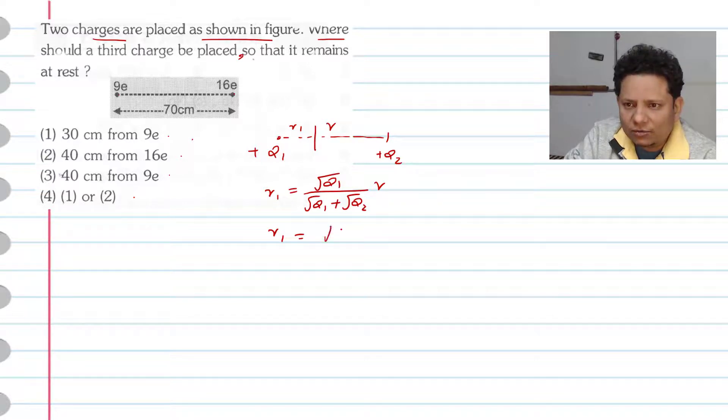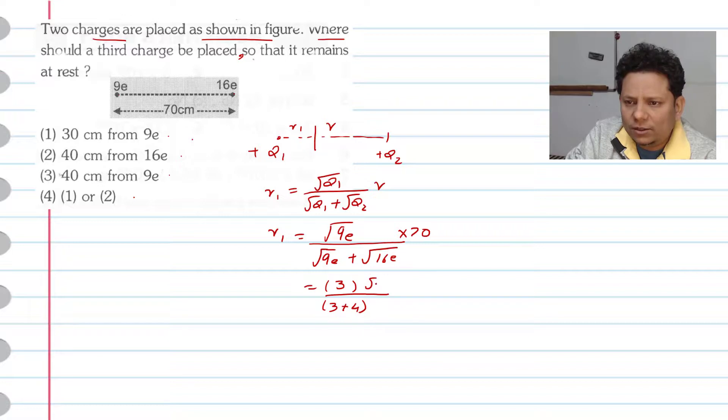Q1's value becomes: square root of 9E divided by (square root of 9E plus square root of 16E), multiplied by R which is 70. So the value will be: square root of 9 which is 3, and you can write below 3 plus 4.